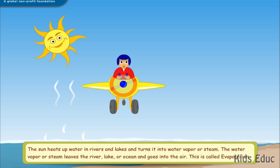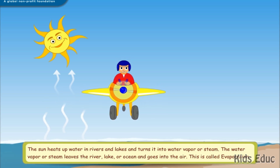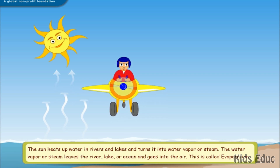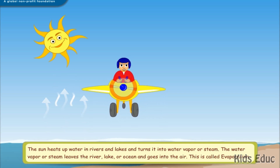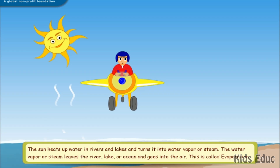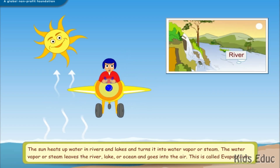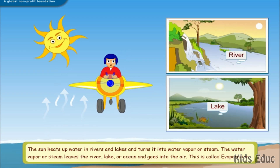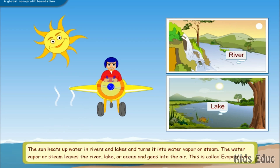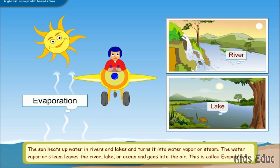The sun heats up water in rivers and lakes and turns it into water vapor or steam. The water vapor or steam leaves the river, lake, or ocean and goes into the air. This is called evaporation.